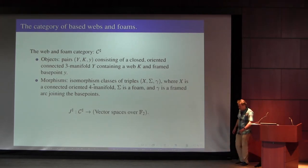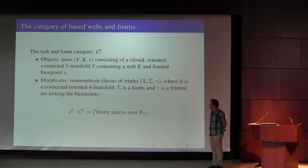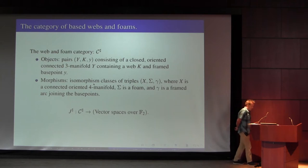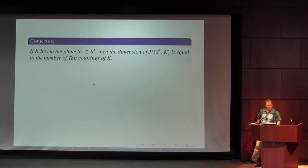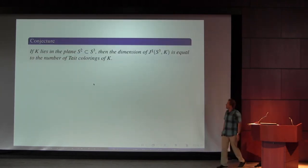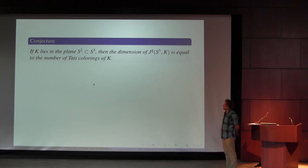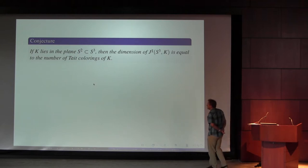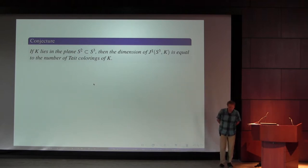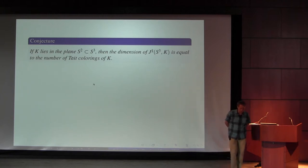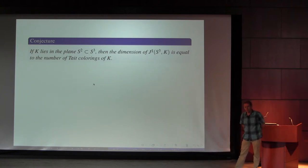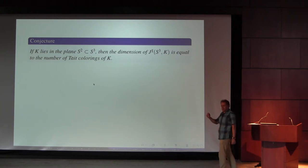The invariant that we defined is a functor from this category to vector spaces over a field with two elements — no, a field with one element. That element appears in the talk. The main conjecture is that if the web lies in a plane in the three-sphere, then the dimension of this invariant equals the number of Tate colorings. A Tate coloring is a three-coloring of a trivalent graph where at each vertex the colors must be distinct.